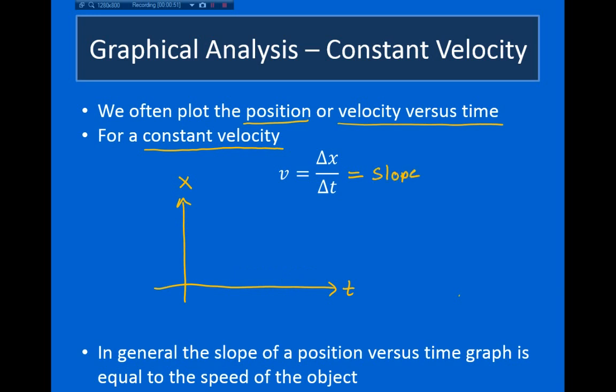When an object moves with a constant velocity, we have a constant slope, so you have a straight line with a constant slope, and the slope of this line is equal to your velocity.